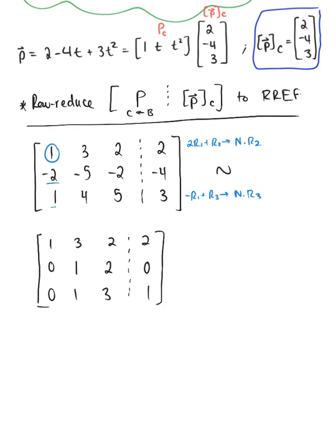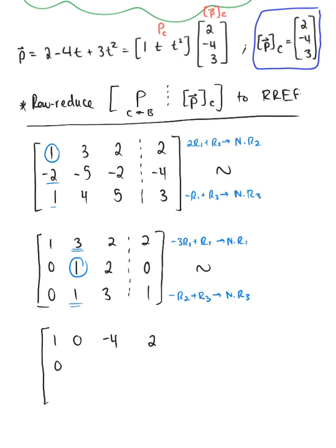Moving to the second pivot, we eliminate entries above and below it. Performing negative 3 times row 2 plus row 1 gives the new row 1, and negative row 2 plus row 3 gives the new row 3. This yields row 1 as [1, 0, −4 | 2], row 2 unchanged as [0, 1, 2 | 0], and row 3 as [0, 0, 1 | 1].